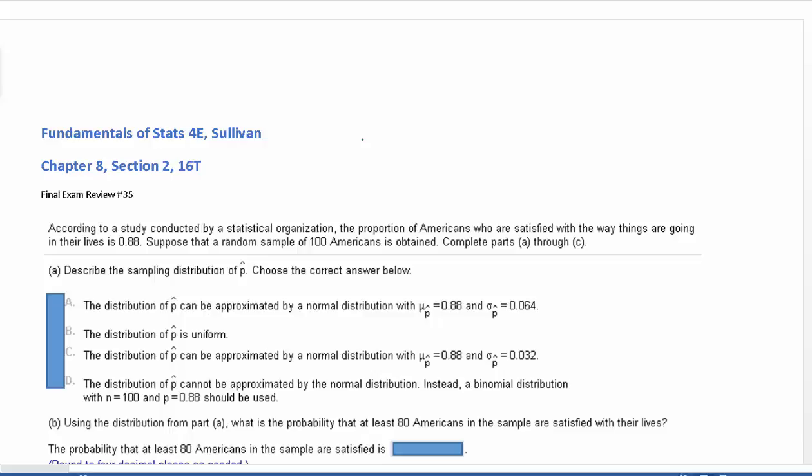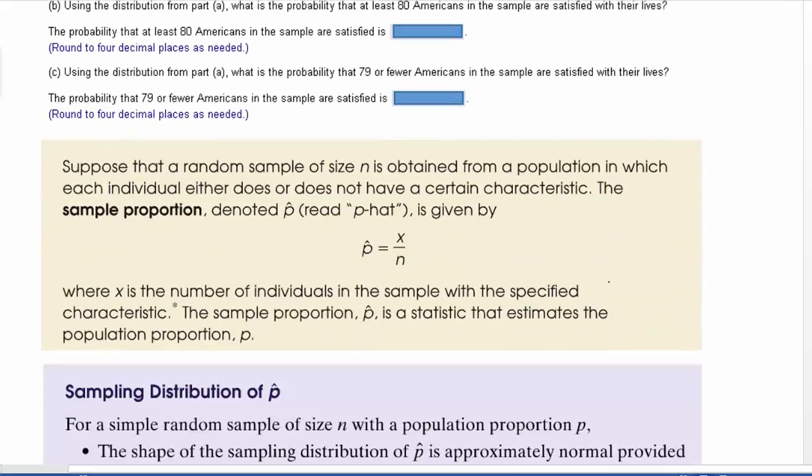The first thing is asking us to describe the sampling distribution of p-hat. We've got our choices of A through D. So first off, I want to discuss p-hat really quickly. P-hat is just your sample proportion.